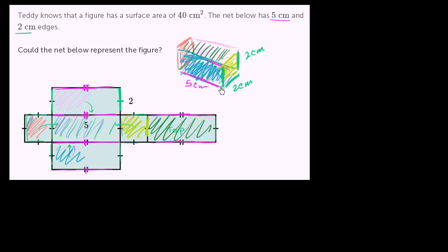Let's go back to the original question: is this figure's surface area 40 square centimeters? The net lays out all the surfaces for us, so we just need to find the surface area of each section and add them together. This face is 5 centimeters times 2 centimeters, so it's 10 square centimeters. The same goes for this one - 5 by 2 - and this one, and this one. Each of these four faces is 10 square centimeters.